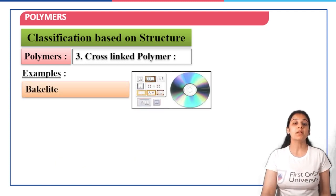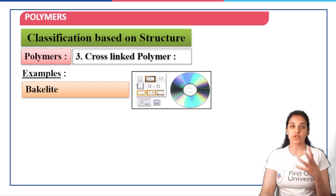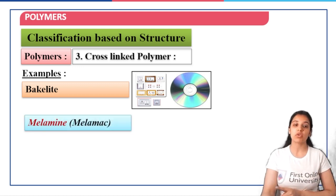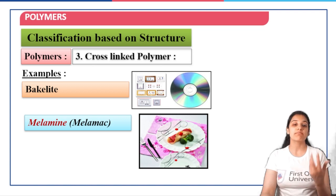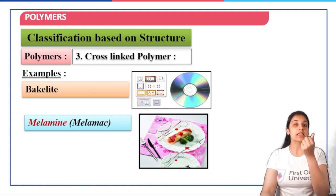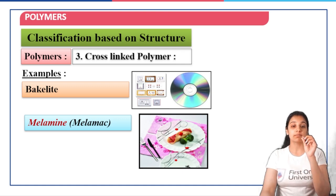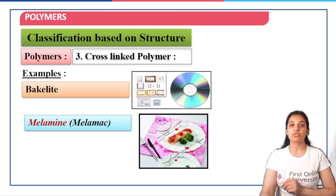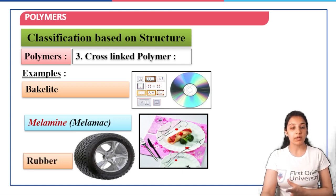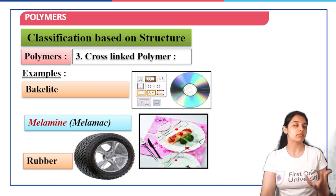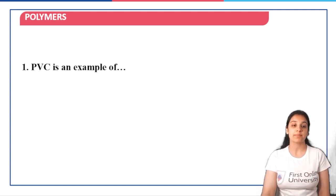For example, bakelite, which is used in the making of switchboards. Melamine, also known as melmac, which is used in making unbreakable utensils. Then rubber, which is used in making tires and has many other uses.